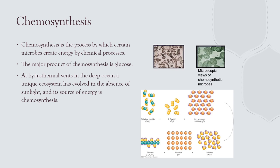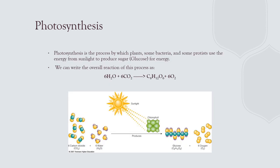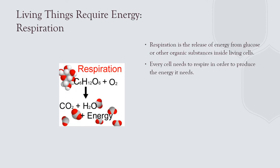The chemosynthesis formula: carbon dioxide, oxygen, and hydrogen sulfide produce water, sulfur (that's the low-tide stink) and glucose. Photosynthesis uses carbon dioxide and water; glucose is produced and oxygen is the waste. Respiration is the opposite: aerobic respiration uses oxygen to split glucose and release its energy, with carbon dioxide as the waste — that's how living things harvest energy.